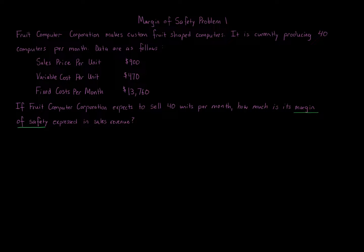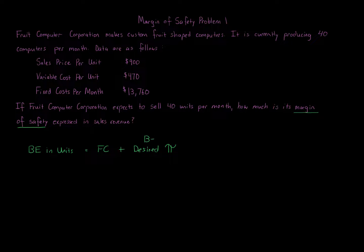The first place you always start with margin of safety is break-even. You want to determine break-even in units or sales revenue depending on what you need in the end. The break-even in units formula is: fixed costs plus desired profit — which for break-even is always zero — divided by the contribution margin per unit.